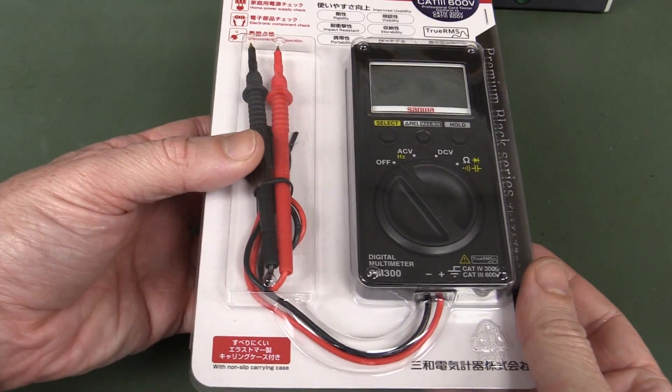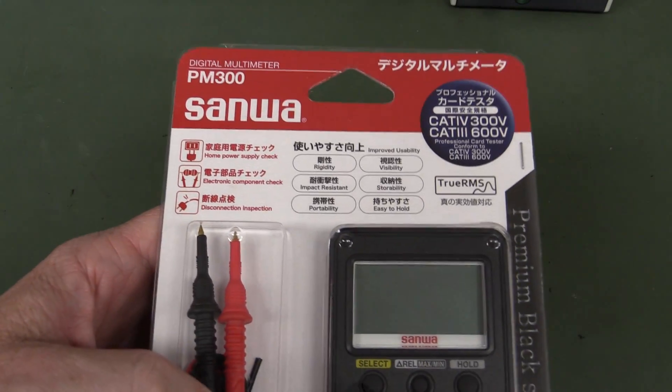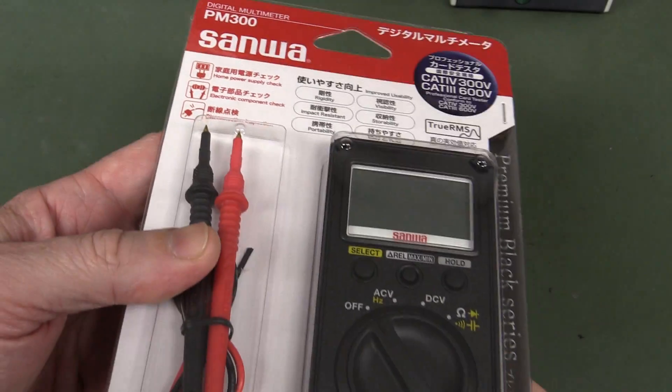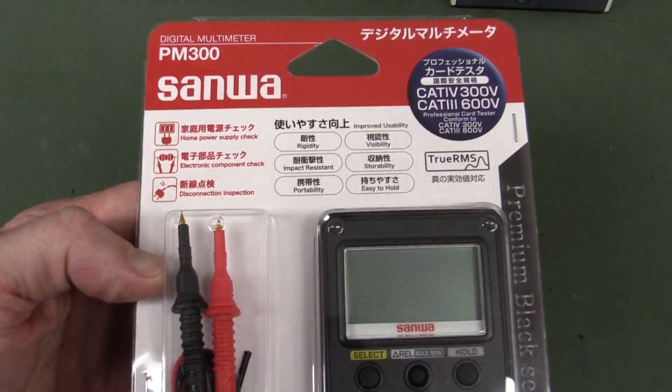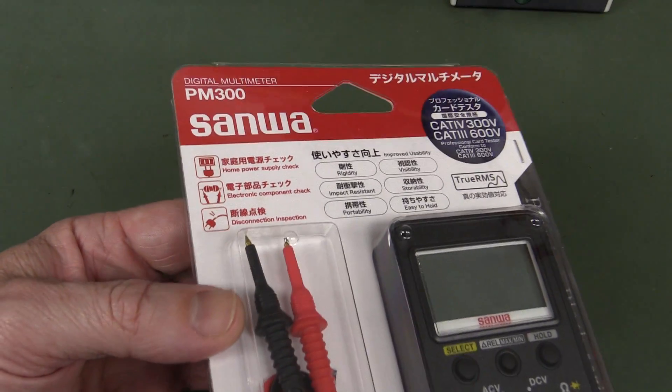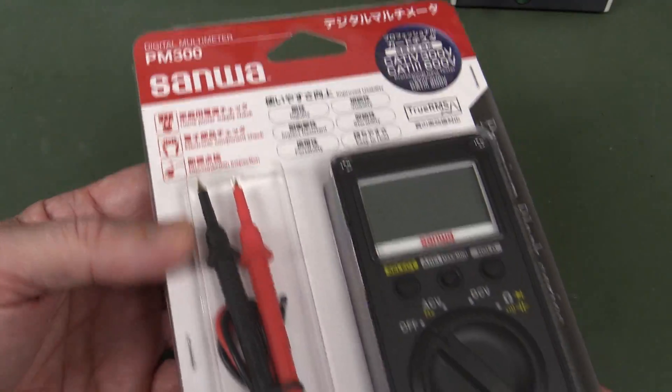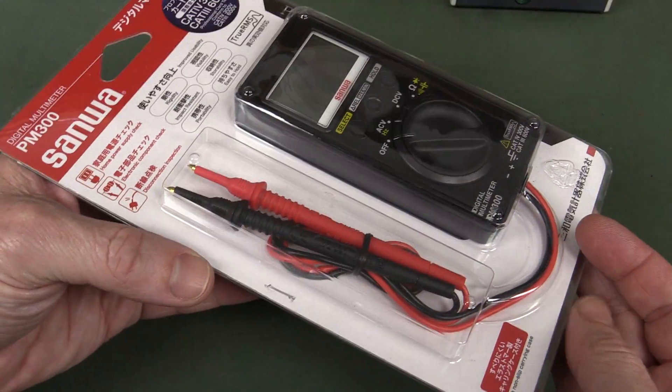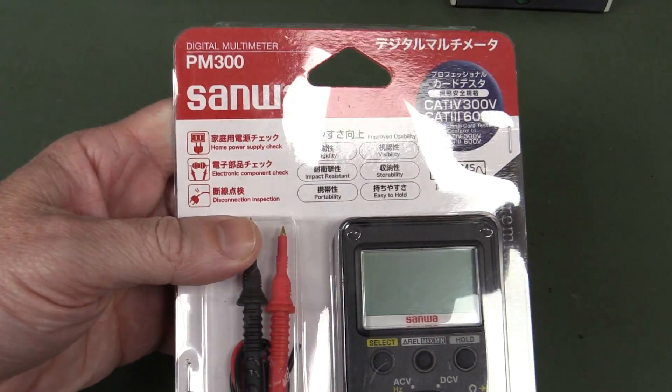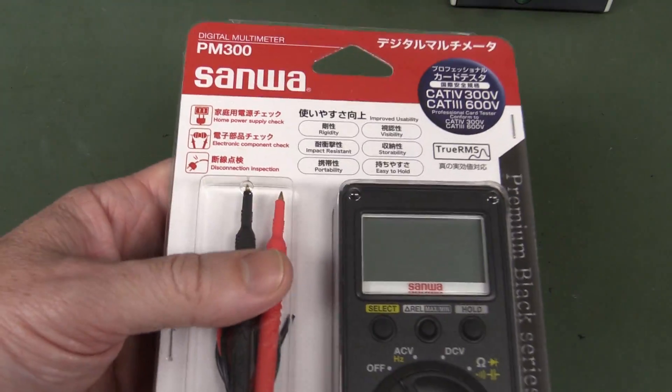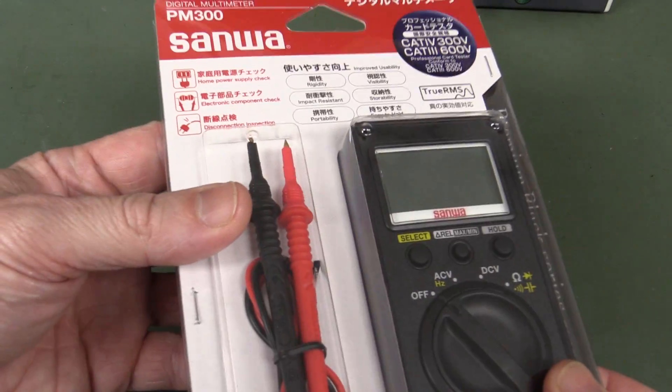I thought I'd show you a new pocket multimeter that I'm carrying on the EEVblog store. I'm just going to do a little unboxing review of this thing, single take, hence why I'm going to put it on the second channel. But I like this little pocket meter so much I am actually selling this on my EEVblog store, so disclaimer, link is down below.